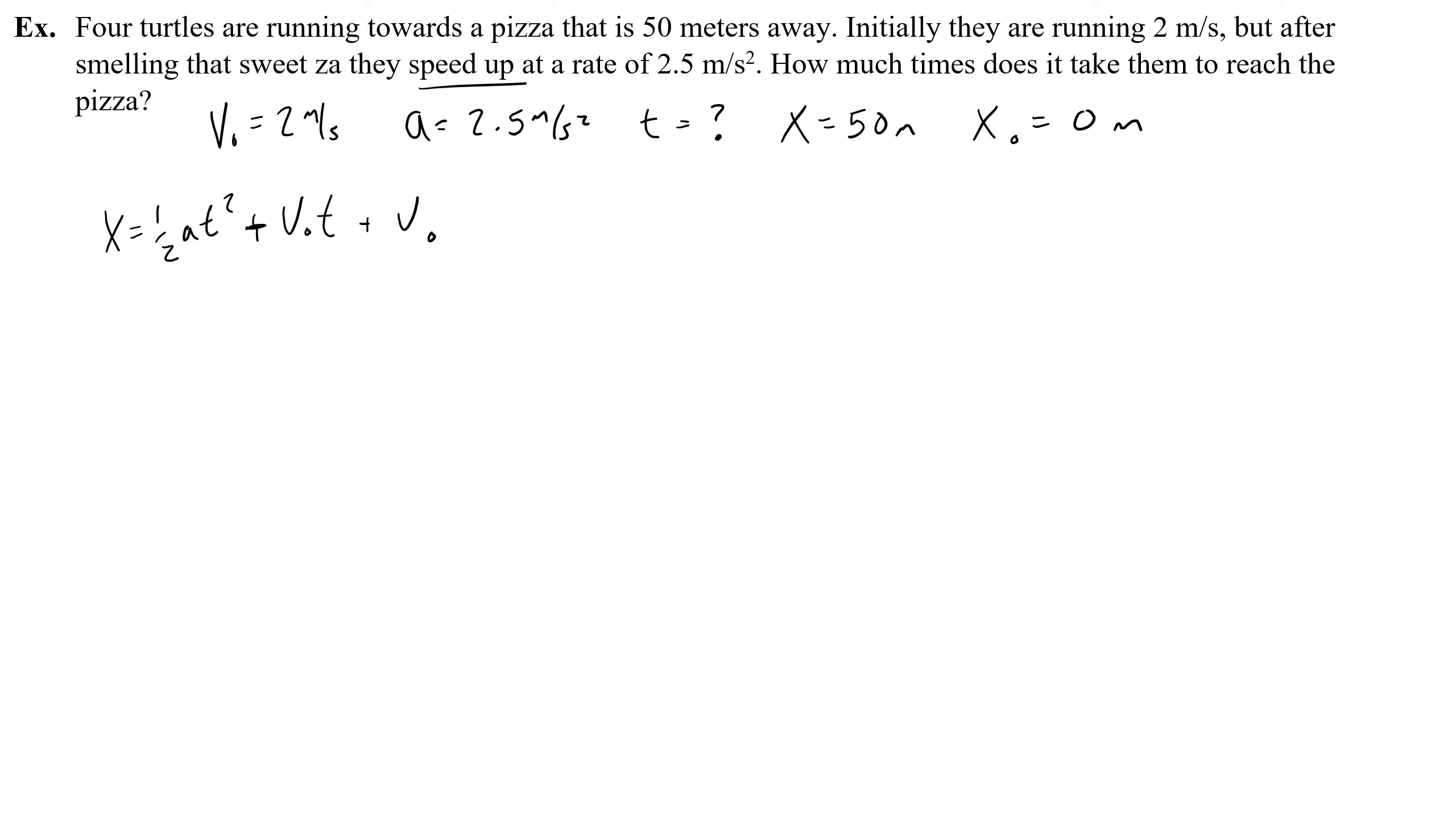To algebraically solve for the amount of time it takes to reach the pizza, you start plugging in your numbers. So I would write x is 50, half of the acceleration, half of 2.5 is 1.25, t squared plus the initial velocity is 2, so 2t, and the initial position is 0. Then you would try and solve for t, which would become problematic because you're going to get subtract 50, you're going to get all of that on the right and 0 on the left and there's no way to get t by itself.